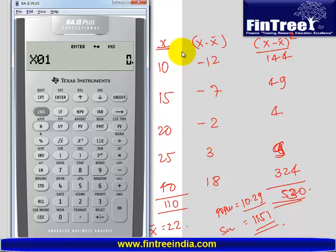Now it is asking us different data values x1. So in this case we have only x values, we don't have y. So 10 enter, downward arrow, do not enter anything in y, we don't have y values. Downward arrow one more, again 15 enter, downward arrow one more time, 20.